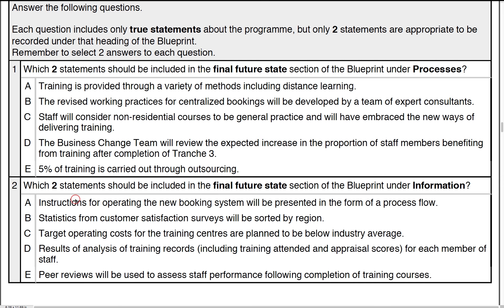Now let's look at the information section — the details we'd have underneath information: operations, measurements, performances, etc. Option A: instructions for operating the new business system will be presented in the form of a process flow. This actually relates to processes — it's called a process flow — so this is not a correct answer under the information section.